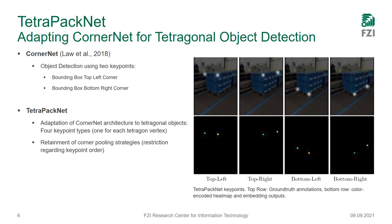What we decided to do for now was to keep the corner pooling strategy as introduced by CornerNet, which means we have to make assumptions about the arrangement of the corners of our tetragonal object. Specifically, we formulate it so that the top-left, top-right, bottom-left, and bottom-right corners assume that top corners are placed further up in the image than their bottom counterparts, and left corners are placed further left than their right counterparts.